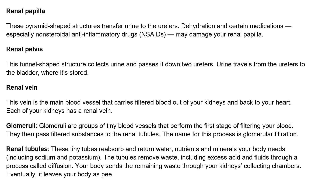You have glomeruli, which are groups of tiny blood vessels that perform the first stage of filtering your blood. They pass filtered substances to the renal tubules in a process known as glomerular filtration. You have renal tubules, which are tiny tubes that reabsorb and return water, nutrients, and minerals your body needs, including sodium and potassium. These tubules remove waste, including excess acid and fluids, through a process called diffusion — the movement of molecules from high concentration to low concentration. Your body then sends the remaining waste to the kidneys' collecting chambers, and eventually it leaves as urine.